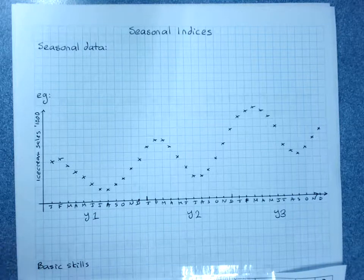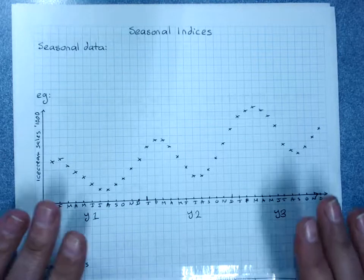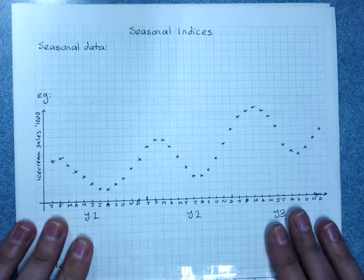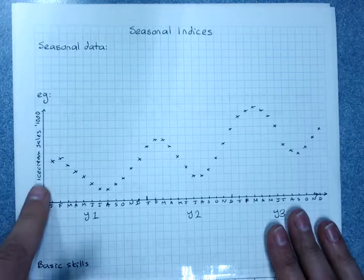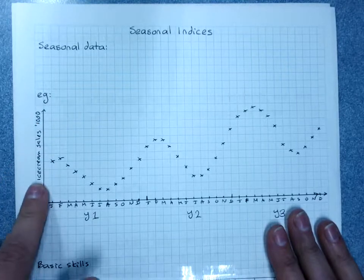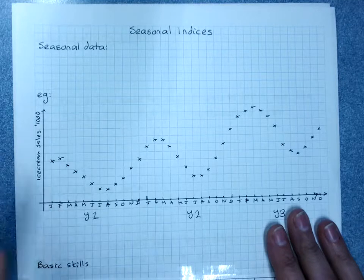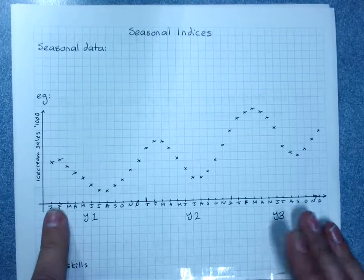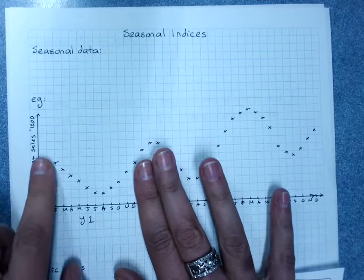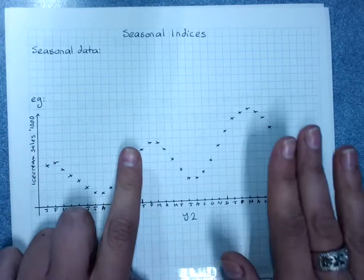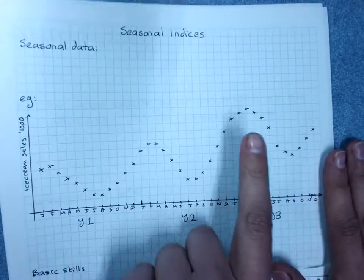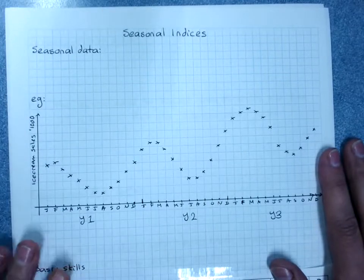Seasonal indices - brace yourselves, this one's a long one. As you can see here, I've got a lovely set of seasonal data. It's very sensibly based on ice cream sales in the thousands, and you can see that within the year it has a clear up down up pattern. So it's very clearly data with seasonality.